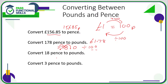18 pence is going to be 18.0 divided by 100. If we're dividing, we're moving the decimal point to the left two positions — 1, 2 — in front of the 1. So that's going to be £0.18.